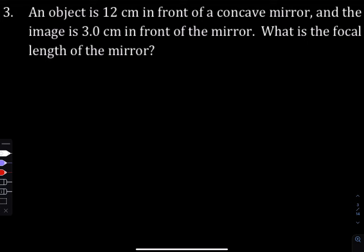Now this question talks about mirrors — they're a little bit different than lenses. The question says an object is 12 centimeters in front of a concave mirror and the image is 3 centimeters in front of the mirror. What is the focal length of the mirror? Let's talk about how mirrors work.